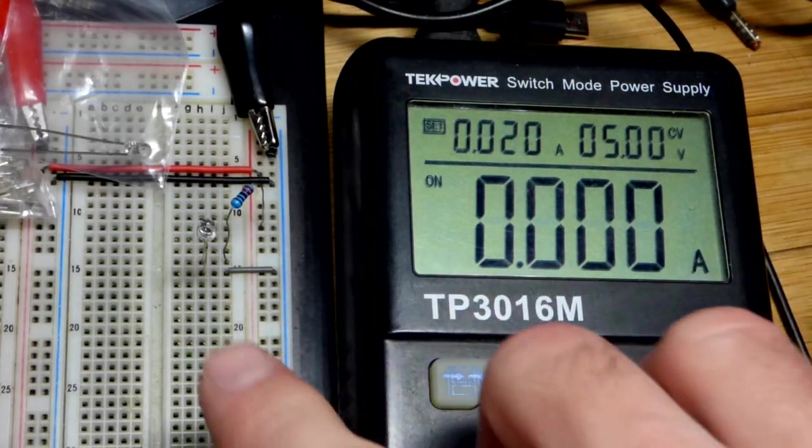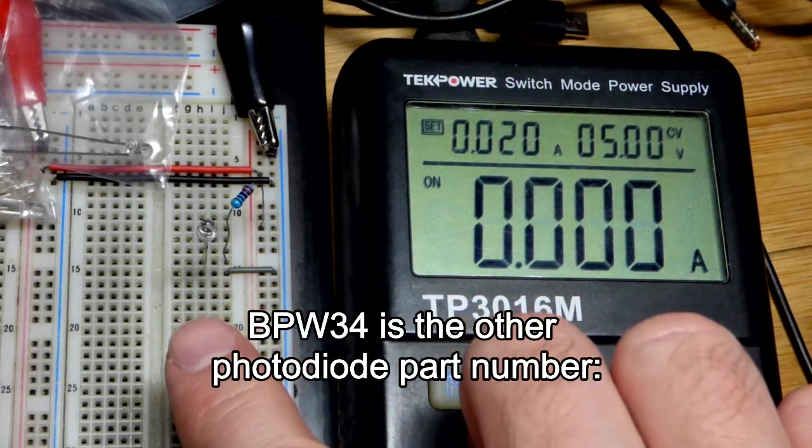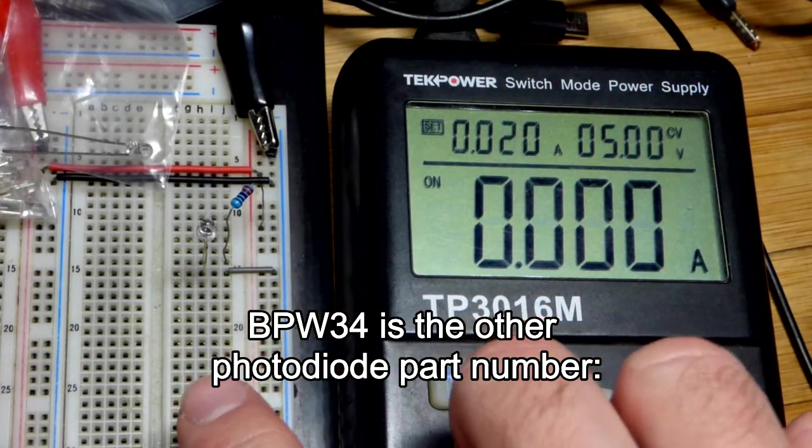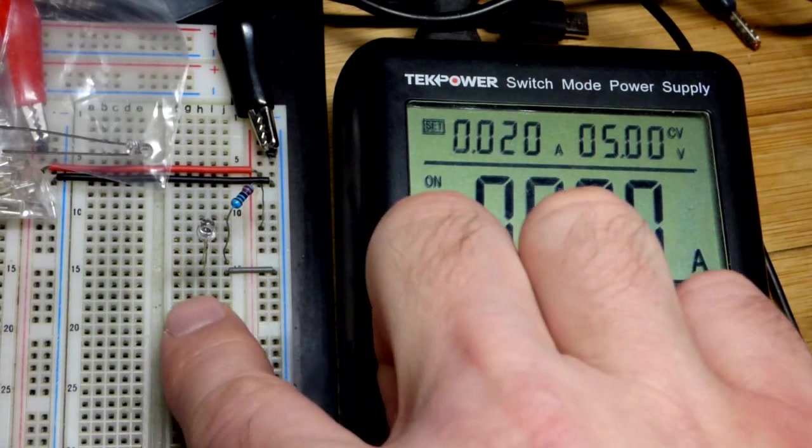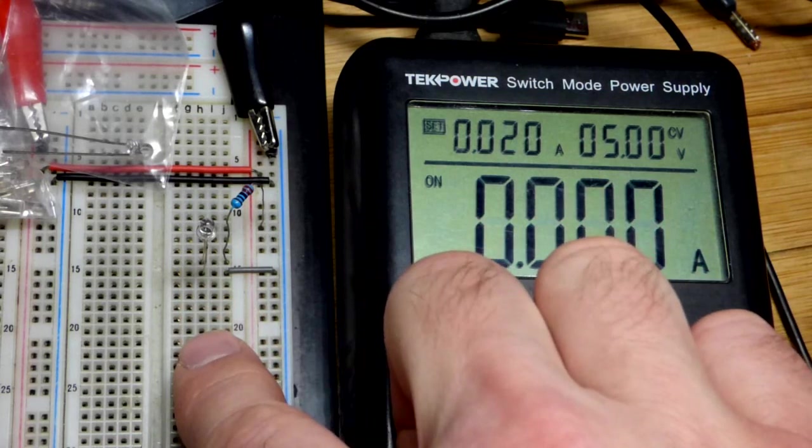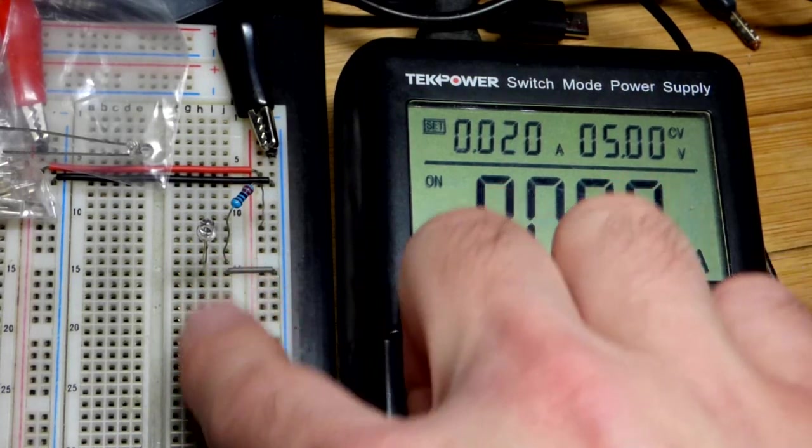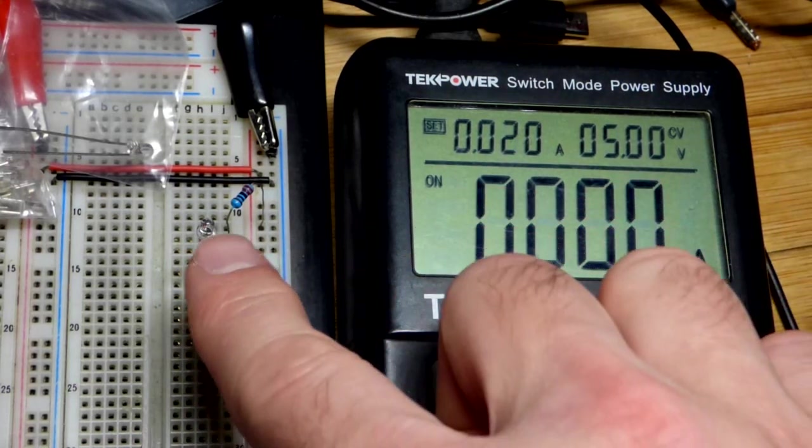Now there are other photodiodes. There's, I believe it's BPW35. Just going by memory though, I could be way off. And it's kind of square shaped. It's quite a bit bigger and lays pretty flat on the board. Got a pin on top and bottom. And you use it reverse biased just like this one.